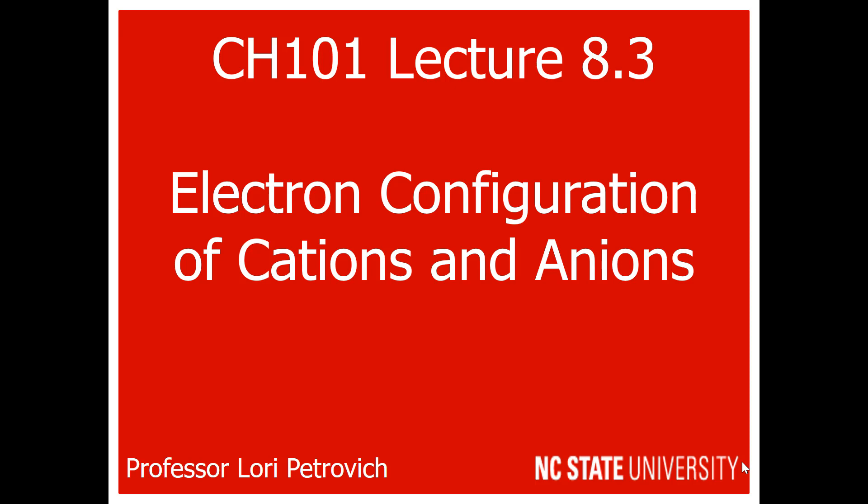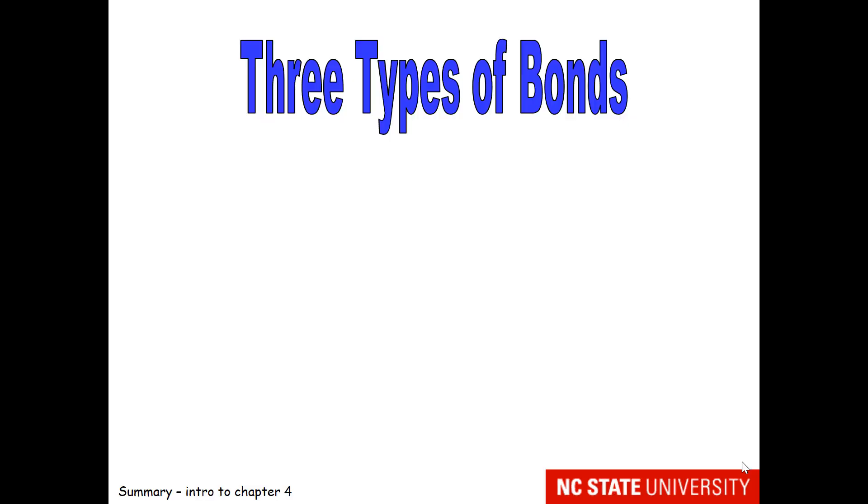The last part of this lecture deals with the electron configuration of cations and anions. We're actually starting chapter 4, where we investigate different types of bonds.